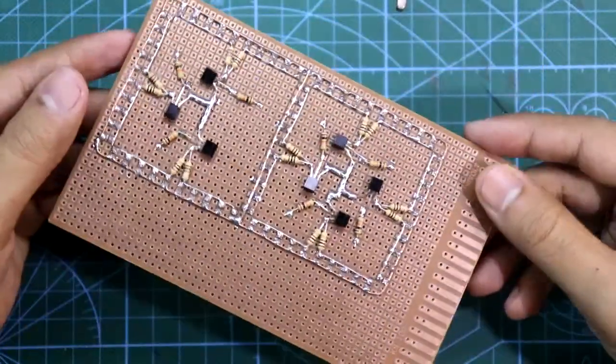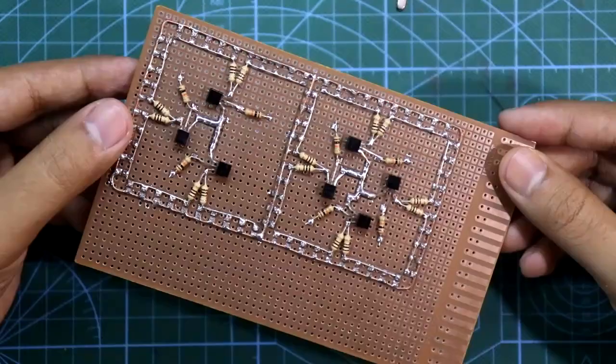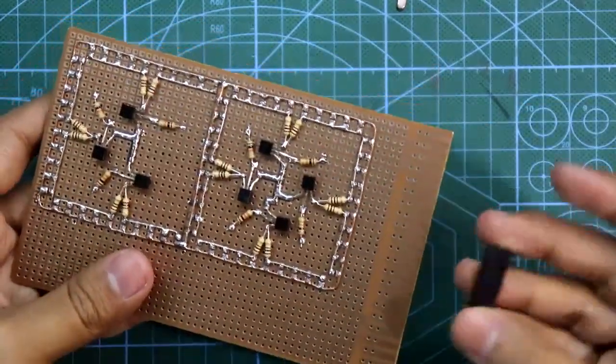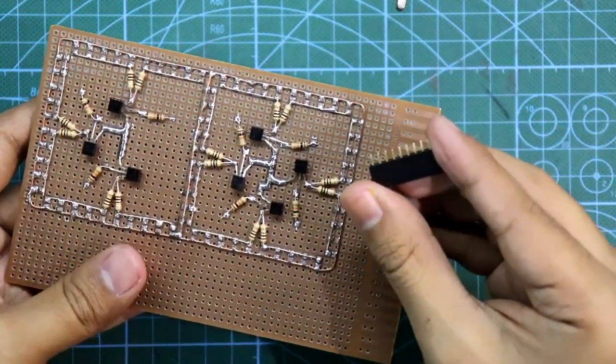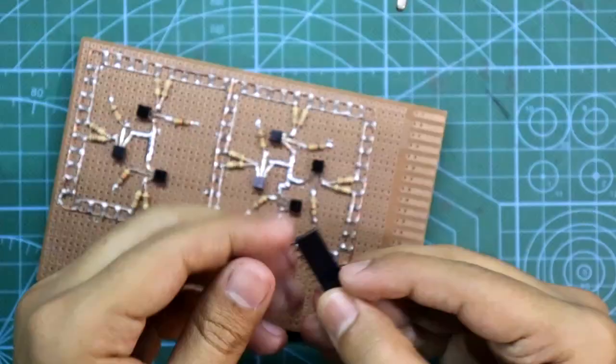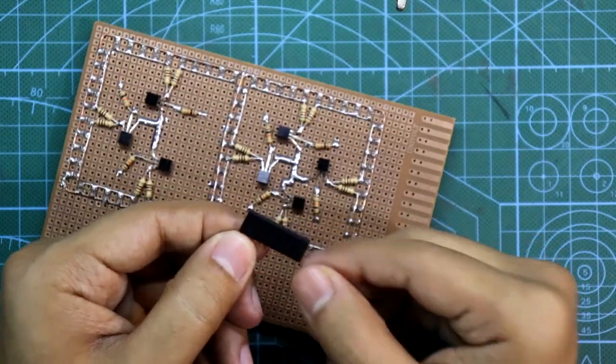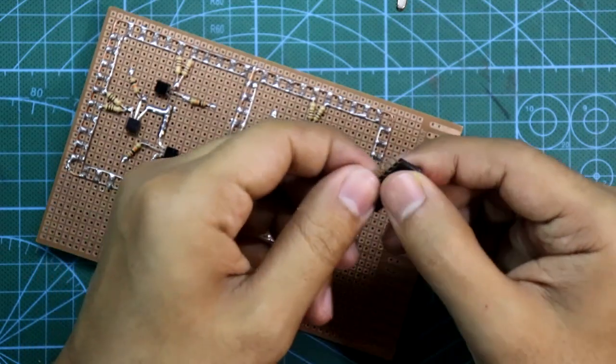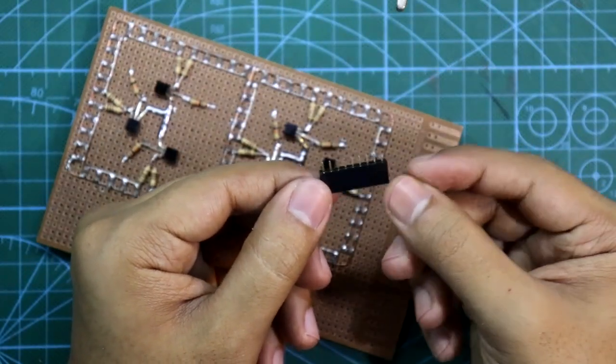So this is how I have completed all the soldering. Now we have to put the female connector. It is 9 pin connector. And 7 connector for the 7 segments. And other two will be plus 5 volt and ground.